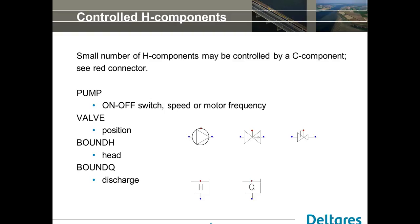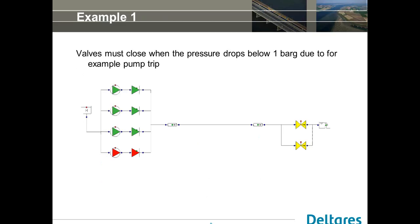That was very briefly the background of the control module of Wanda. Now we want to show it in action - we're going to look at the system which we want to control. Here's a pumping station, pipeline, and two valves. Basically, what can happen is we have a full pump trip. The pump trip can send a pressure wave going into your pipe. Then at a certain moment you want to close these valves to minimize the minimum pressure - for example, you want to close it if the pressure drops below one bar.